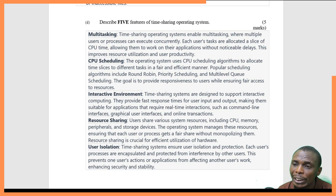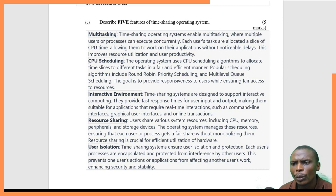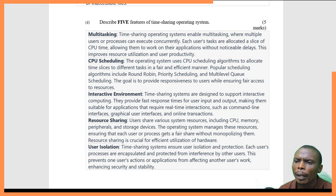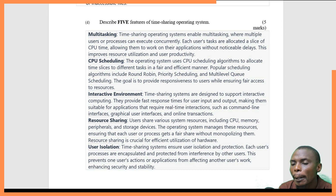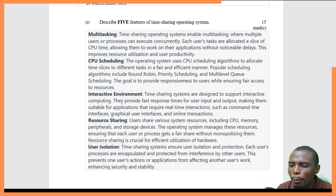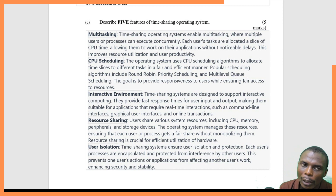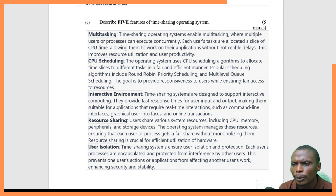Two: CPU scheduling. The operating system uses a CPU scheduling algorithm to allocate these time slices. All processes cannot run at the same time or be engaged by the CPU simultaneously — there must be a procedure that the CPU uses to switch between them. This is what we call CPU scheduling.